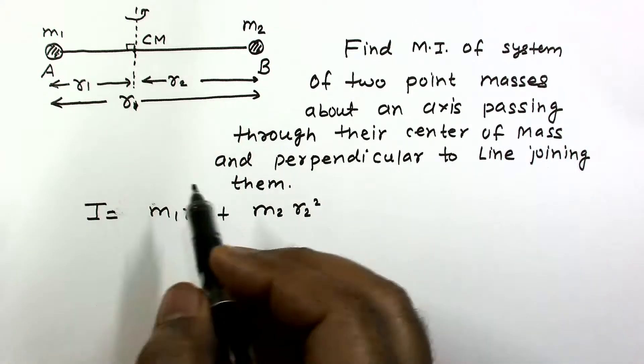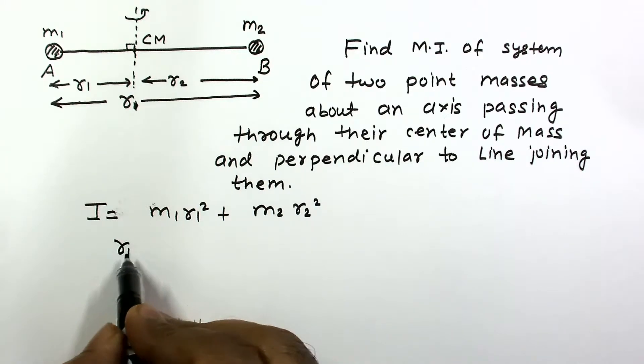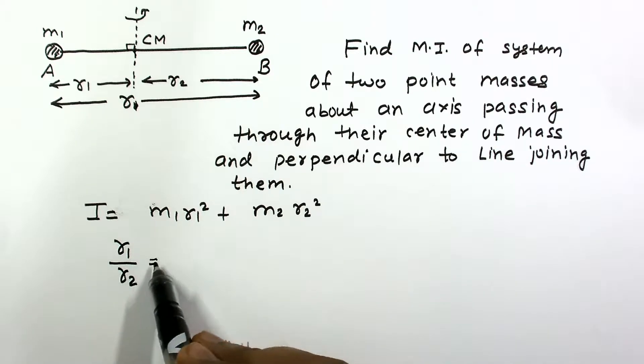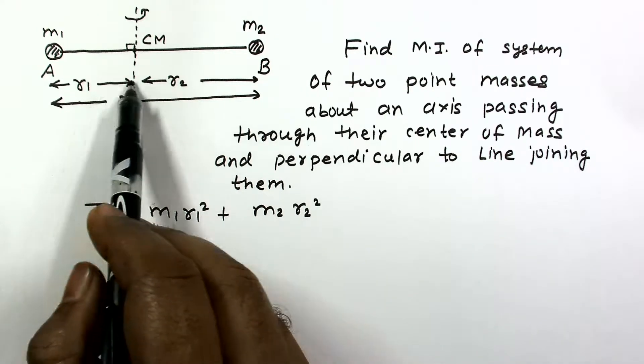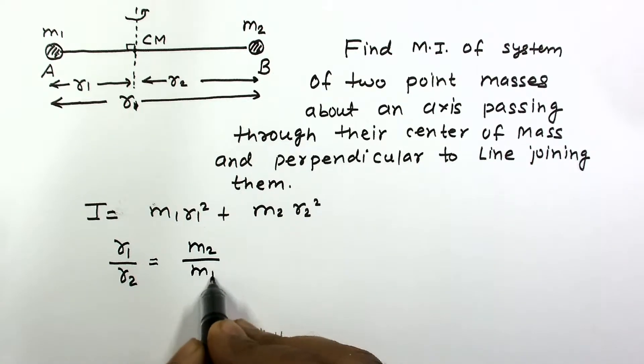So we need to divide it into R1 and R2. R1 by R2 should be in inverse mass ratio. This is the center of mass, so M1's distance should be in inverse ratio.